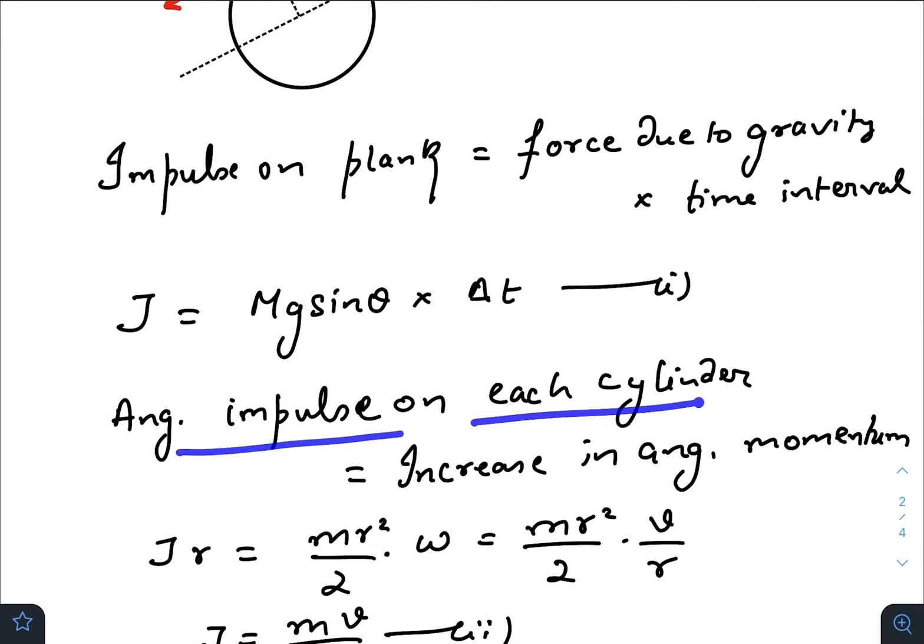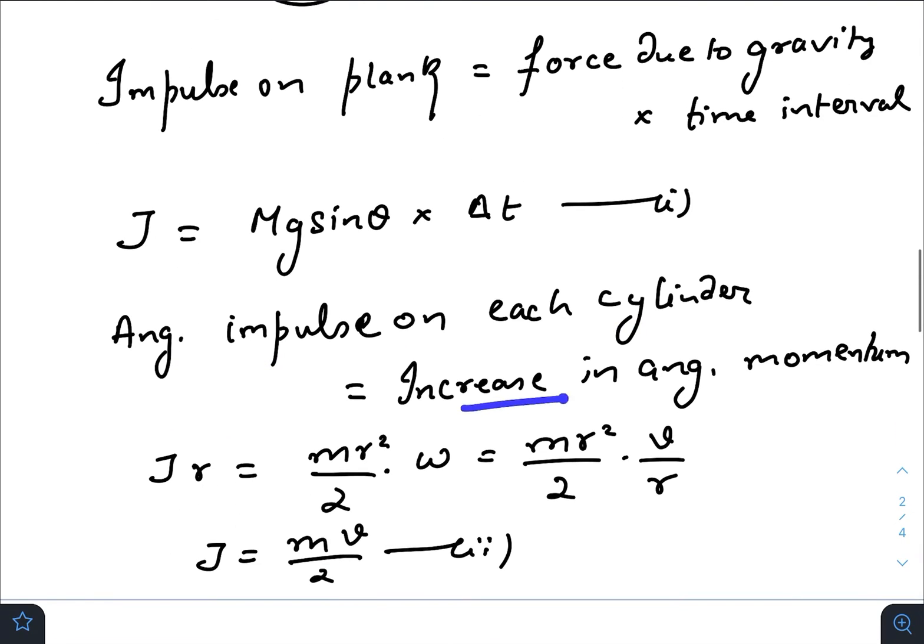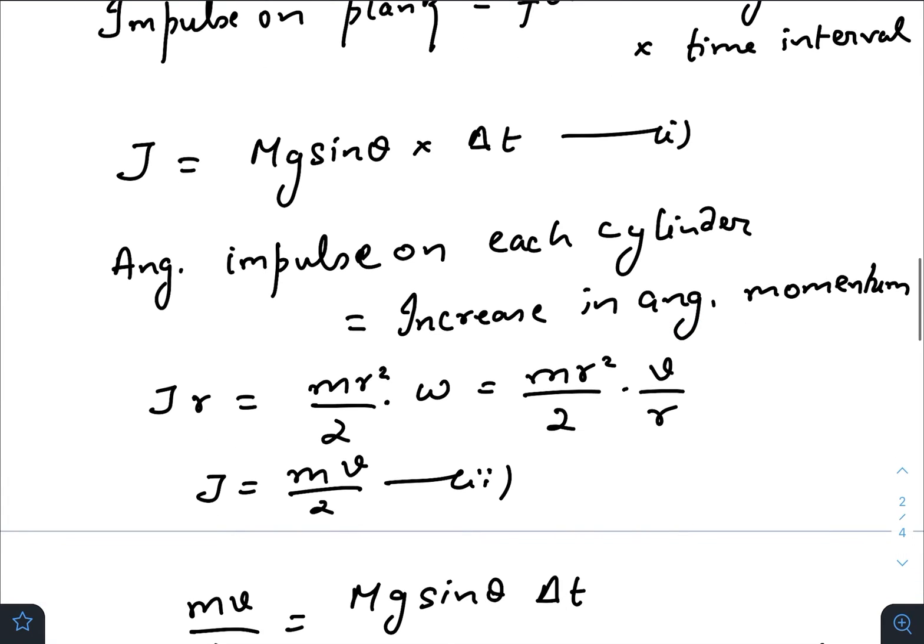Now angular impulse on each cylinder is equal to increase in its angular momentum. So angular impulse on each cylinder is J times R. Considering it as a solid cylinder, which it should be, moment of inertia is mr²/2. Angular velocity, considering there is no slipping, should be equal to v by R.